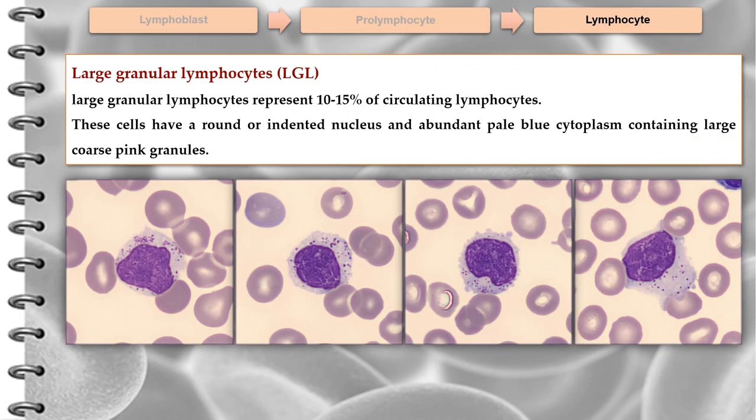Large granular lymphocytes represent up to 10-15% of circulating lymphocytes. These cells have a round or indented nucleus, an abundant pale blue cytoplasm containing large coarse pink granules.